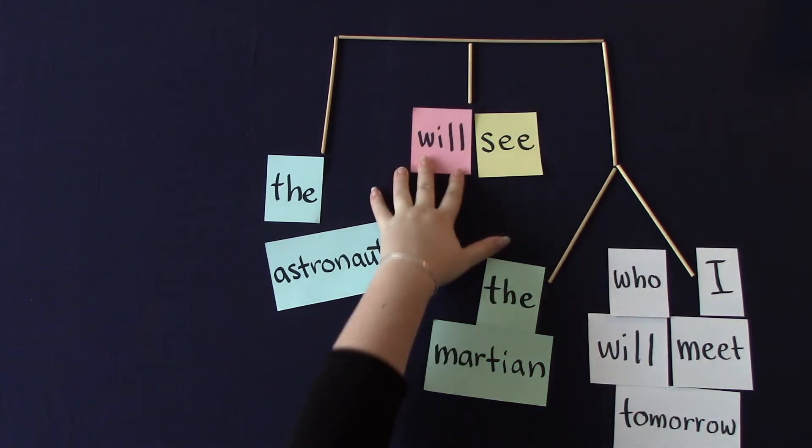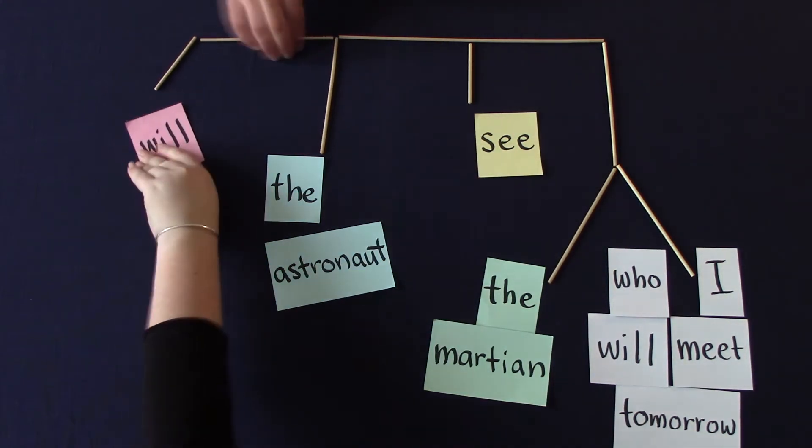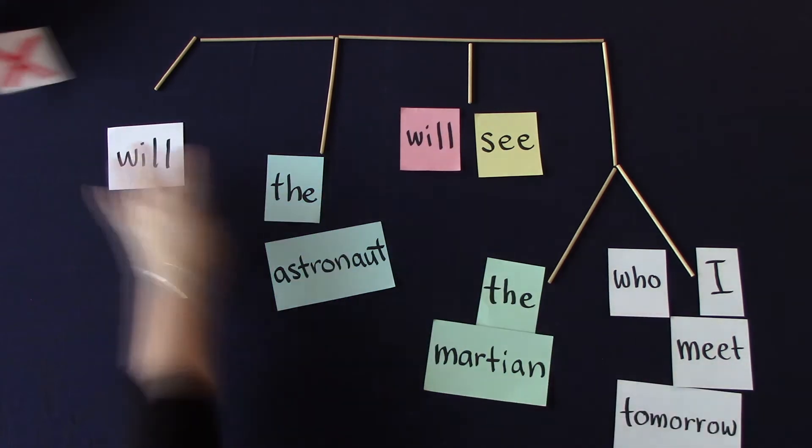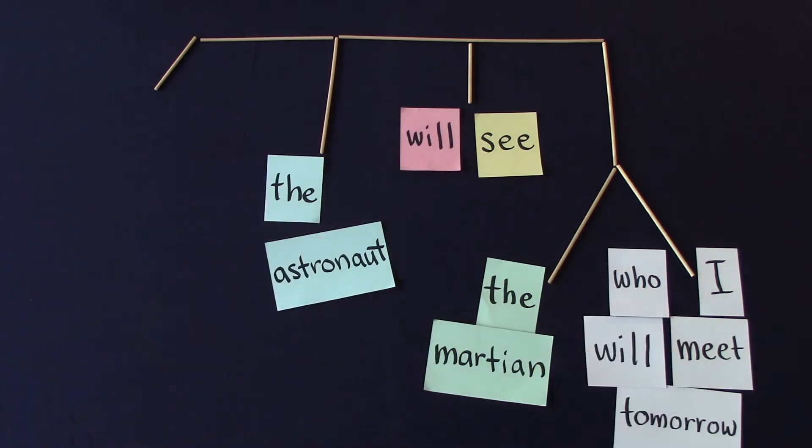So what does this give us? We can see a clear difference between the will that's up here, that connects to the main branch, and that's the one we can move. Whereas the will that's down here, if we move it, that's the one that sounds weird.